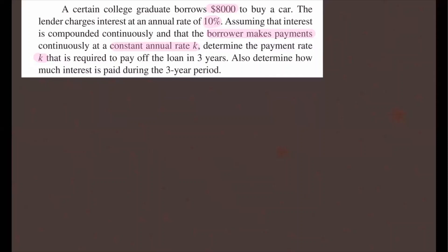So let's answer the first part. We want to determine the payment rate K to pay off the loan in three years. This is going to be modeled by the following differential equation: dS/dt equals the rate times S minus K, where this is the rate of change. S is the amount after some time T, R is the interest rate, and K is the constant deposit or withdrawal. Since you're paying off the loan, it's minus K.